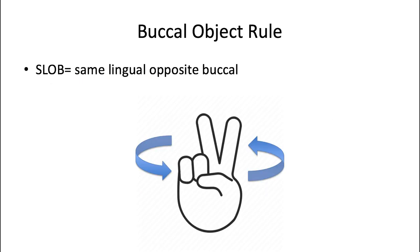The last thing I want to talk about is the buccal object or SLOB rule. A dental x-ray is a two-dimensional image of a three-dimensional object, which means it has some inherent limitations — mainly that we don't get any sense of depth. But if you take two images of the same spot at slightly different angles, you can gain this sense of depth. You can determine where an object is — maybe an impacted tooth or a certain root canal — and whether it's buccal or lingual. SLOB stands for same lingual, opposite buccal.